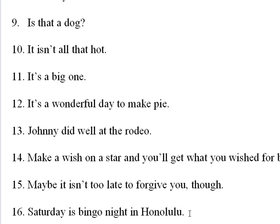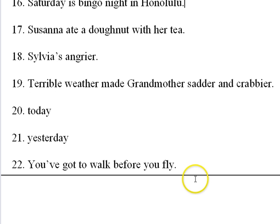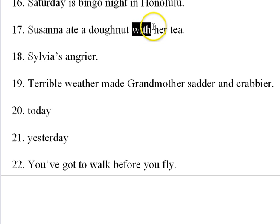Number sixteen: Saturday is bingo night in Honolulu. Saturday is bingo night in Honolulu. And let's take the last stretch here. Number seventeen: Susanna ate a doughnut with her tea. Notice the stress on the small word. Susanna ate a doughnut with her tea. I'm going to attribute some stress where it might not ordinarily fit, because sometimes the pattern — the meter — becomes fairly strong and influences us to read a line with emphasis in places we might not typically place one.